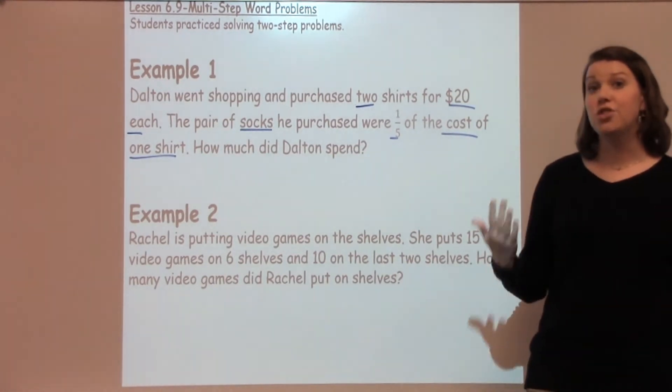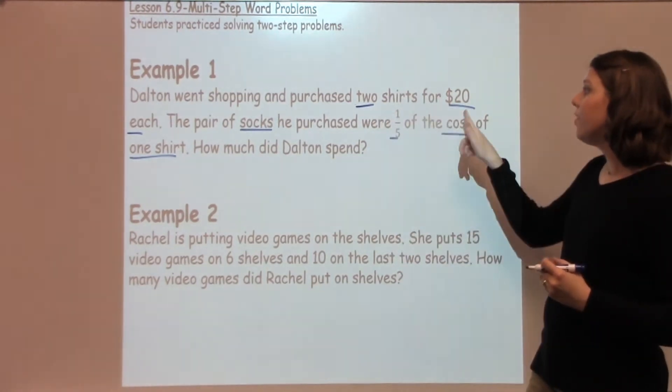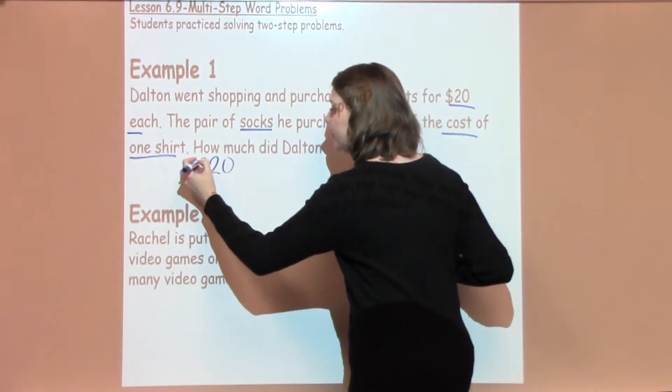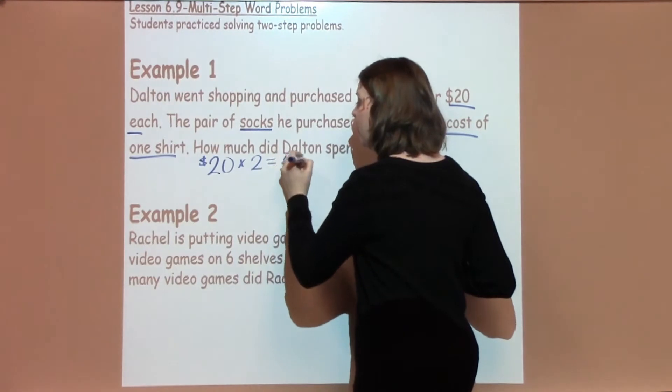I'm going to start with what I do know first for my very first step. I know there are two shirts for $20 each, so I'm going to take $20 times 2, which is going to give me $40.